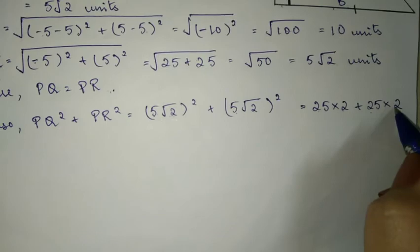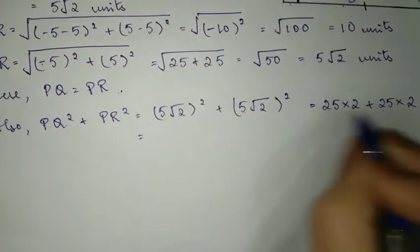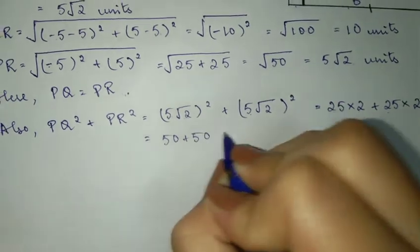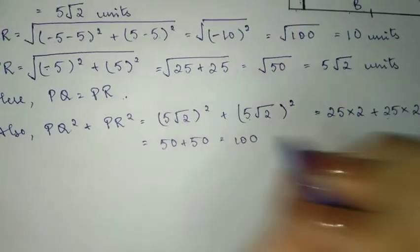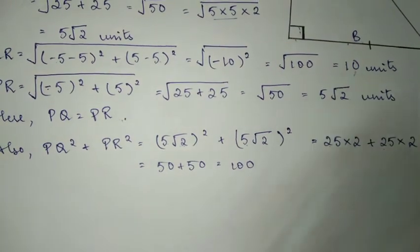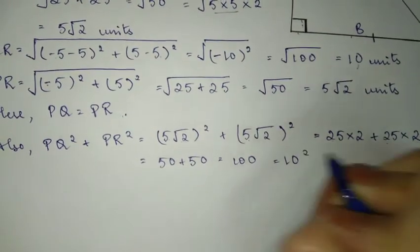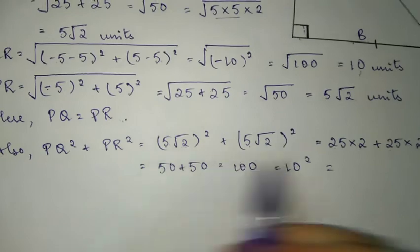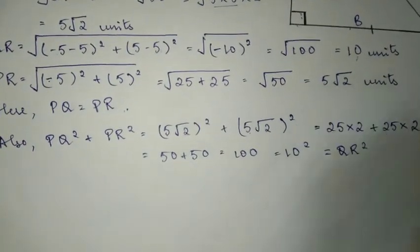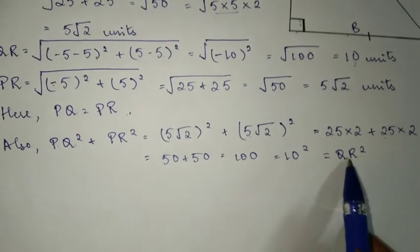So 25 into 2 plus 25 into 2. 50 plus 50 gives us 100. 100 is 10 squared, which equals QR squared.